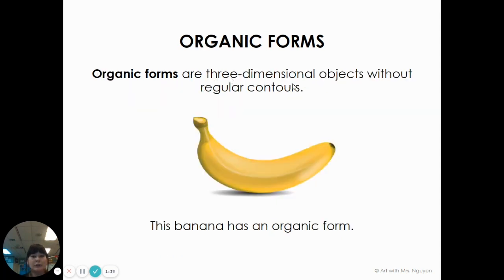Organic forms are three-dimensional objects that are more free form. Like a banana is an organic form. Any kind of fruit, vegetables, anything that's three-dimensional that doesn't have a regular name is an organic form.